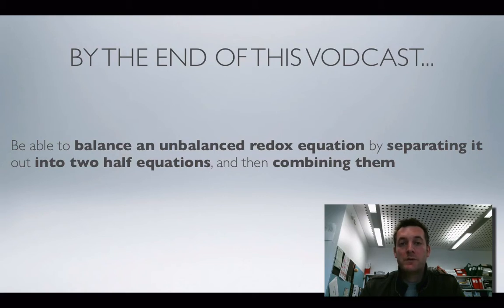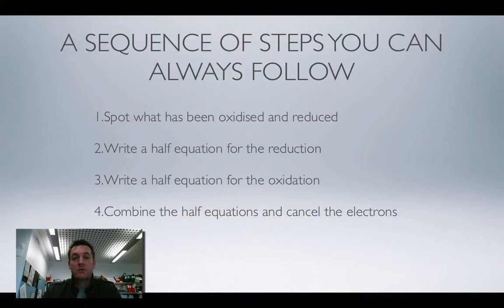Well, you kind of have been here before in that you should know by now how to write a balanced half equation and how to combine two half equations to make a balanced redox equation. What we're going to be looking at in this particular film is taking a redox equation that isn't balanced, taking it apart, and turning it into two half equations, which we can then recombine to give us a balanced equation. So, this is a way of balancing redox equations. And in going through the two examples that I'm going to go through, I'm going to always follow these four steps.